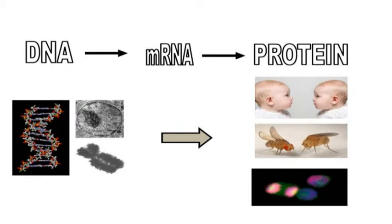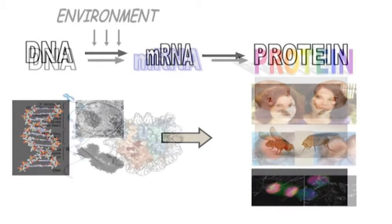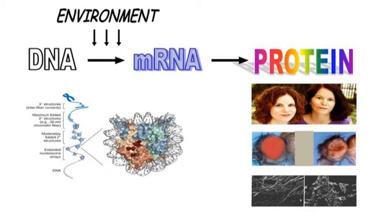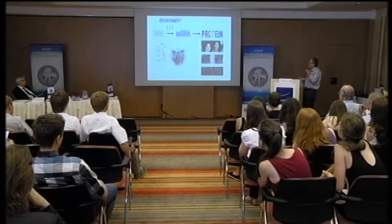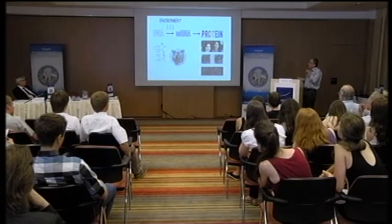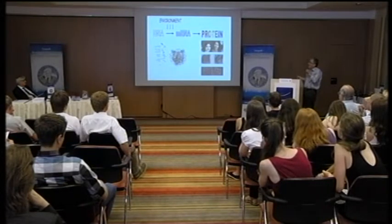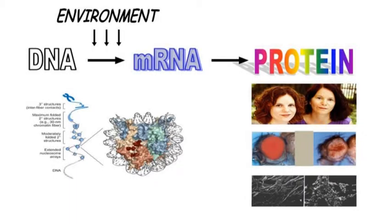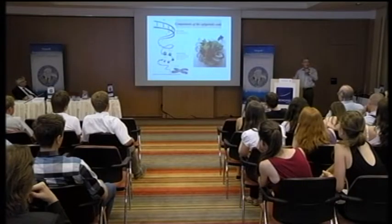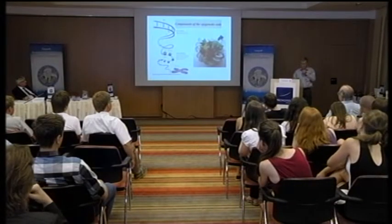All of this is based on the function of cells which are dividing, and when there are mistakes in this process, it will lead to different disease states. However, the determination of protein, and by these the phenotype, is very greatly influenced by the environment. This effect of the environment is basically the epigenetic effect — how the DNA is read, when it is read, and how it is interpreted in the cell.